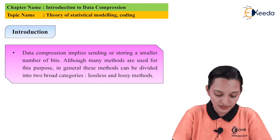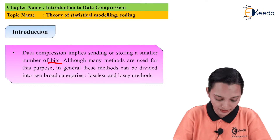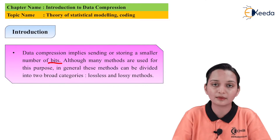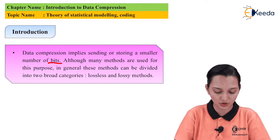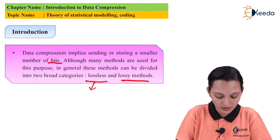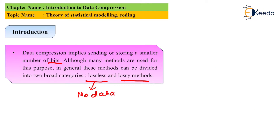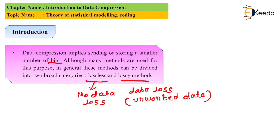Data compression implies sending or storing a smaller number of bits. Although many methods are useful for this purpose, in general these methods can be divided into two main categories: one is lossy and the other is lossless. Lossless means no data loss. Lossy means data loss occurs, but most probably that is nothing but unwanted data. Lossy methods are also useful sometimes where we require to remove unwanted data from the given string of characters. Lossless means we require an exact replica of the given data.